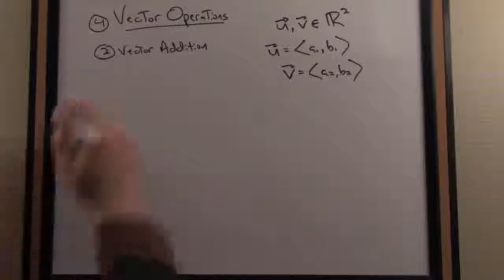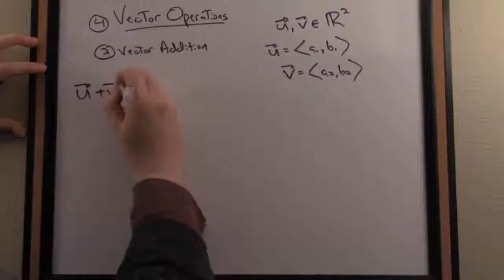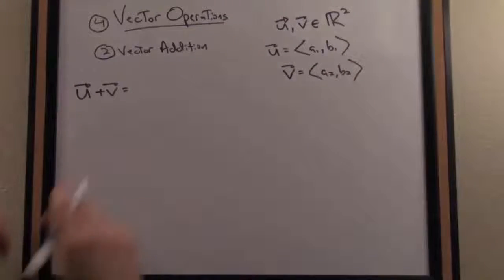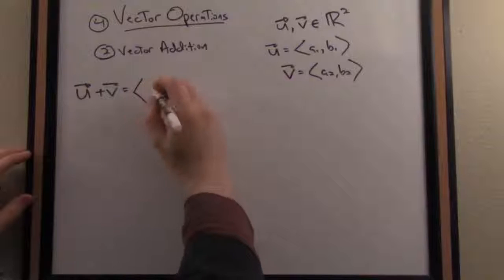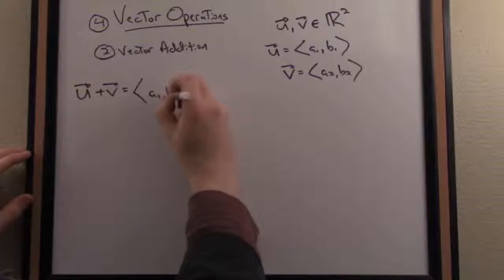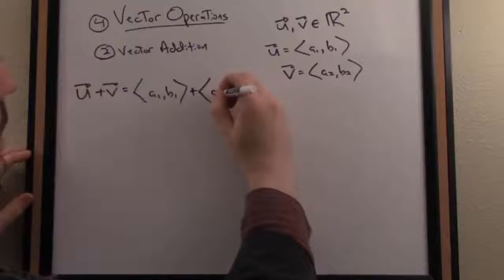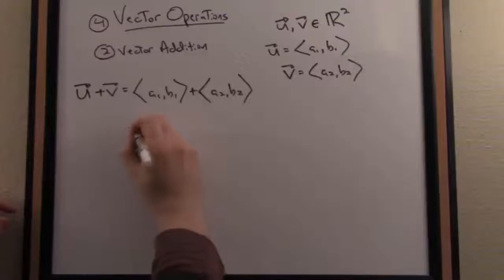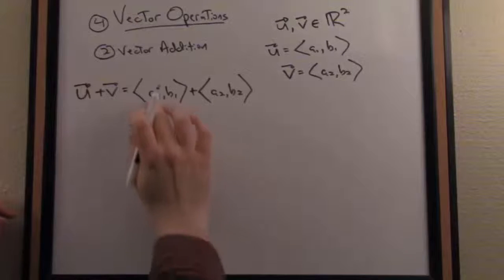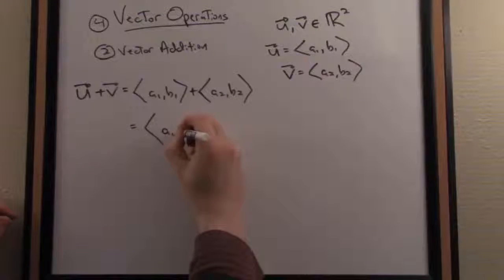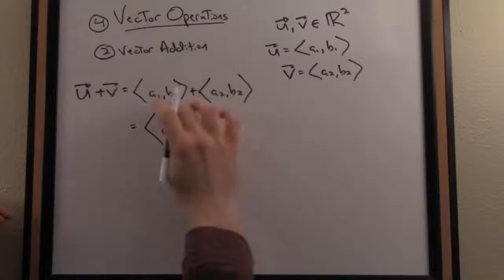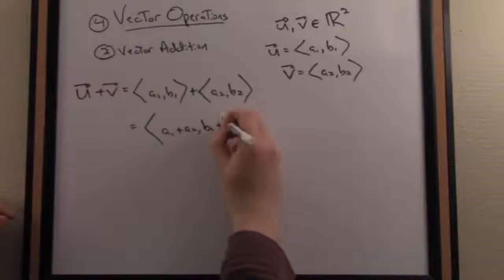So the first question is, how do I add vectors algebraically? It's rather intuitive. We're simply just going to add the vectors component-wise. So if we have u as a1, b1 and v is a2, b2, when I add the vectors together I add them component-wise. So the new x component is going to be a1 plus a2, and the new y component of this resultant vector will be b1 plus b2.